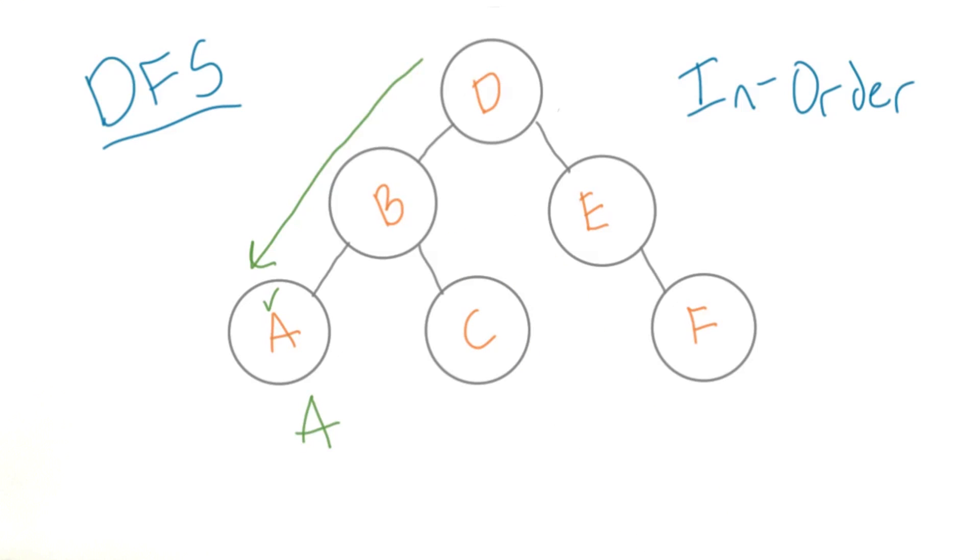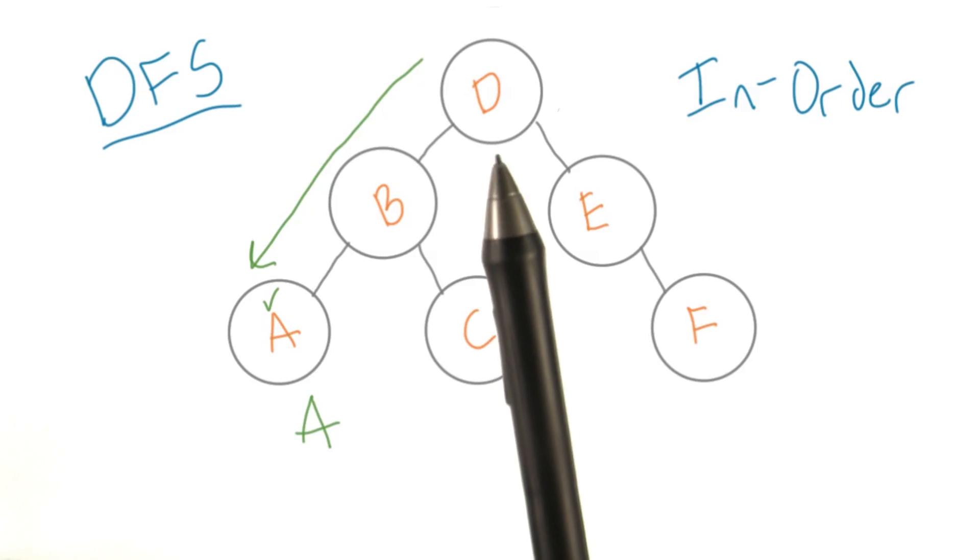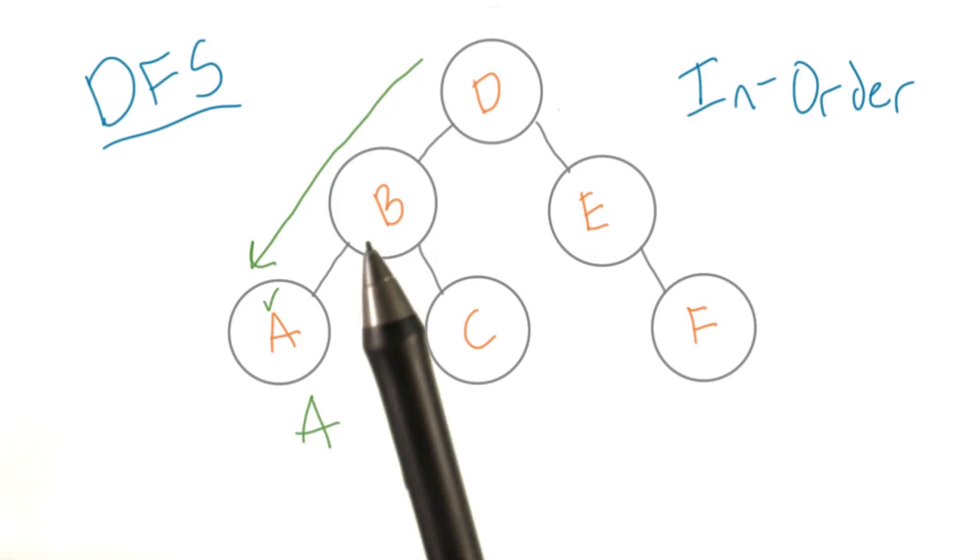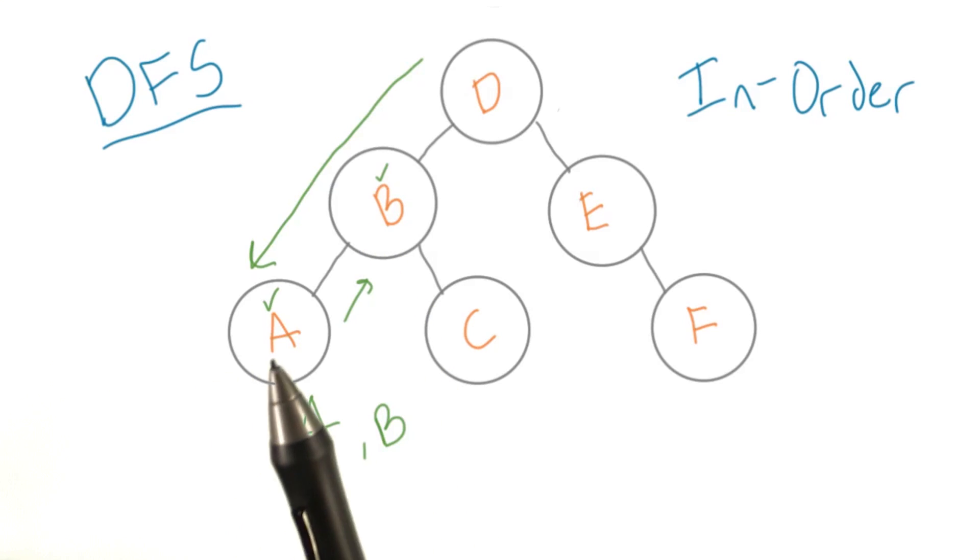Again, we start at the root. Since we haven't seen the left child yet, we have to keep traversing down until we hit a leaf. We check off the leaf and move up to the parent. Because we've seen the left child now, we can actually check off the parent this time. We move on to this right node, which has no children, so we can check it off too. We go back up to the root and repeat all of this on the right side until we're done.